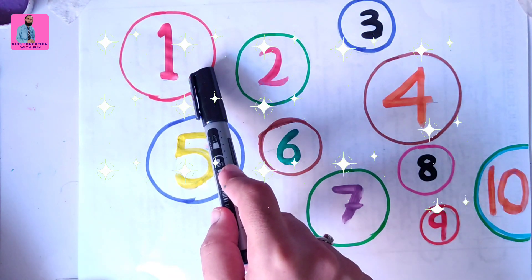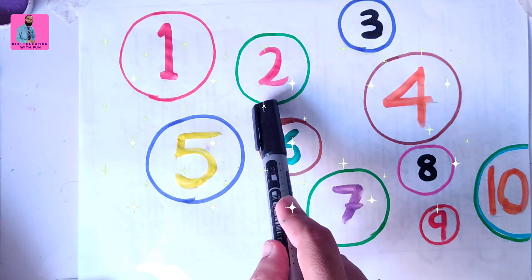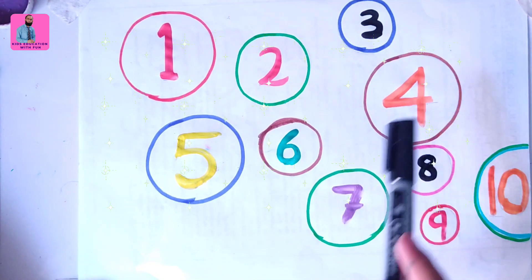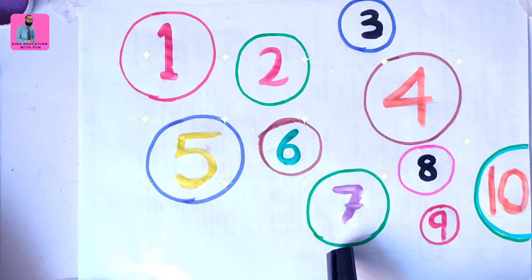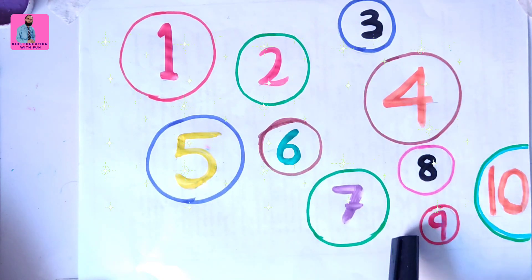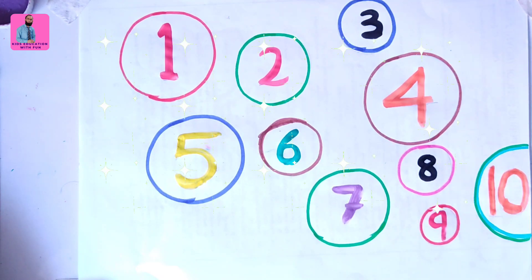First circle number one, two, three, four, five, six, seven, eight, nine, ten. We have done. I hope you have done the same practice, dear kids.